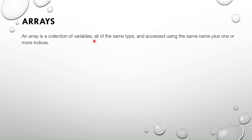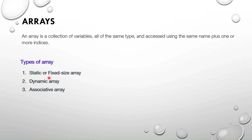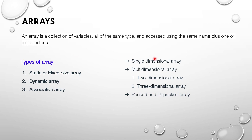In arrays we have three main types: static or fixed size array, dynamic array, and associative array. Within these types we also have single dimension array, multi-dimensional array, and packed and unpacked array. In multi-dimensional arrays, the dimension is more than one — two-dimensional and three-dimensional arrays are mostly used.